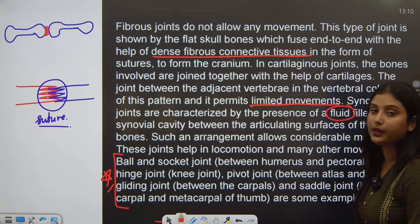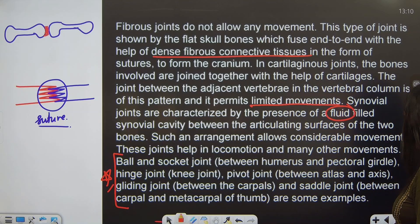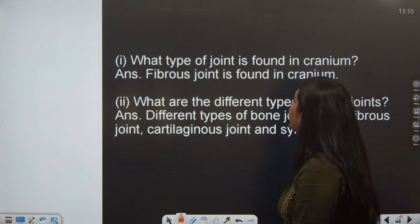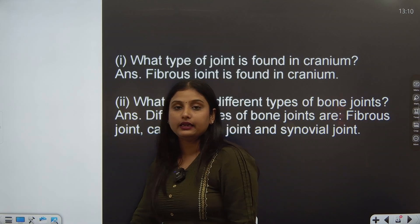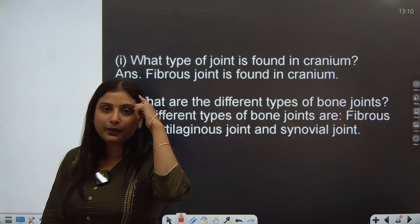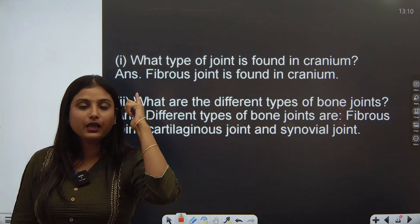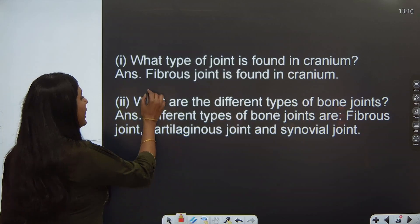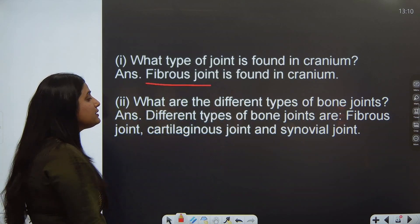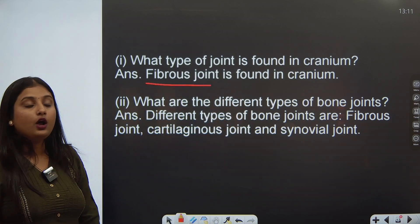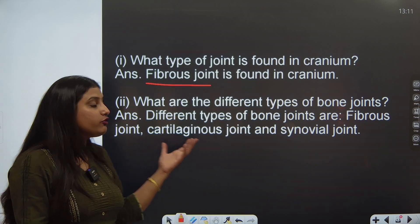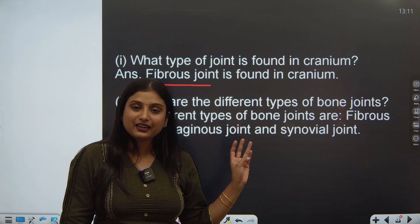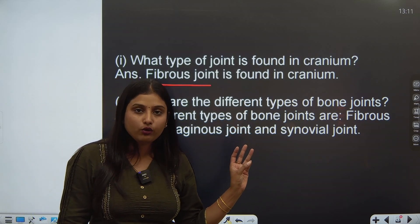Our case study tells us: What type of joint is found in the cranium — in our head, our skull — where there is no movement? Answer: fibrous joints. What are the different types of bone joints? Fibrous joints, cartilaginous joints, and synovial joints — as we just studied.